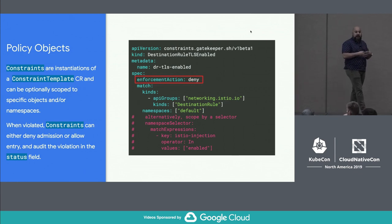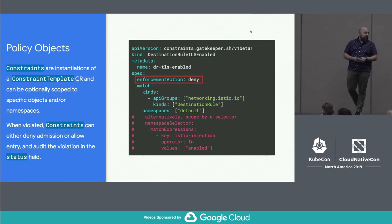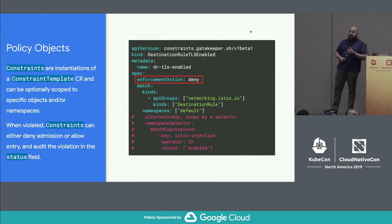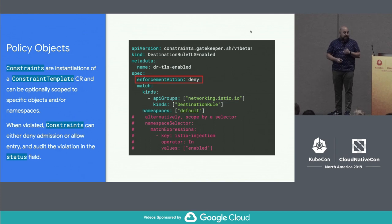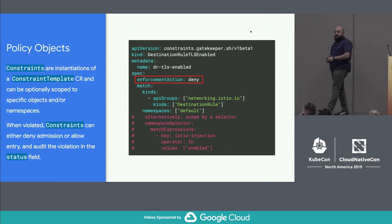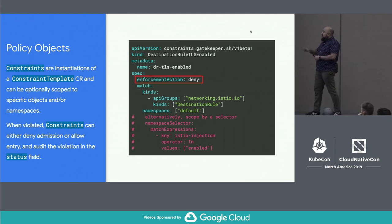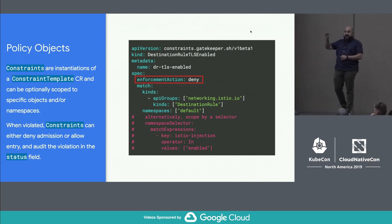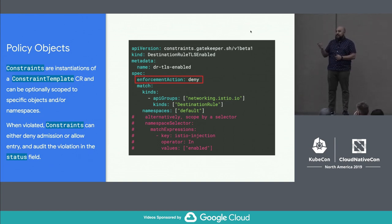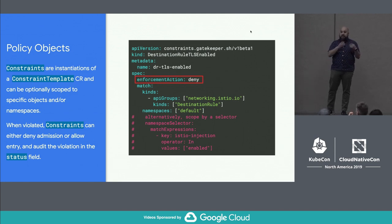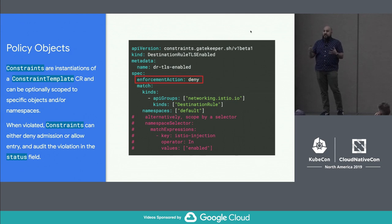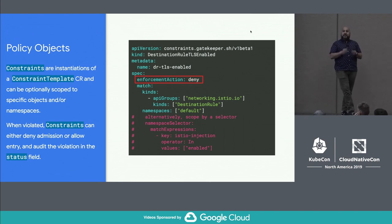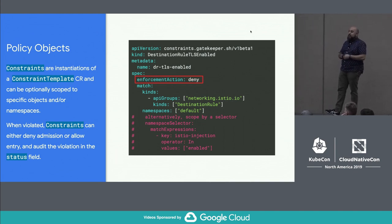So we're telling it this is where to apply this constraint — in this case, scoping it to a destination rule, which is one of the APIs that are part of Istio, and only focusing on the default namespace. You can get more fine-grained by specifying a namespace selector based on labels — for example, only namespaces where Istio injection is enabled. You don't want too many objects applying to every single thing coming through because they're probably not fine-grained enough.